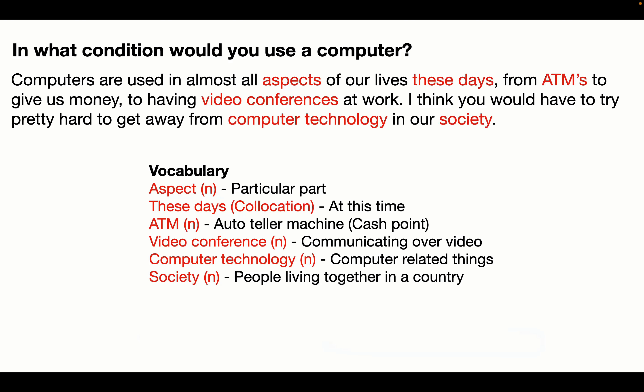Let's look at the vocabulary I used there. 'Aspects' — that's a particular part of something. So if we're looking at a painting, what aspect of the painting is the colour yellow? What part of the painting is yellow? 'These days' is a good collocation to talk about things now, at this time. 'ATM' stands for automated teller machine, also known as a cash point — this is where you get money out from a machine in the side of the wall.